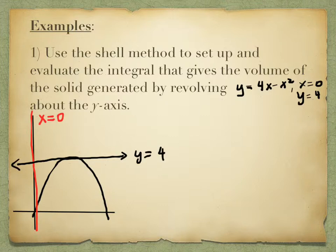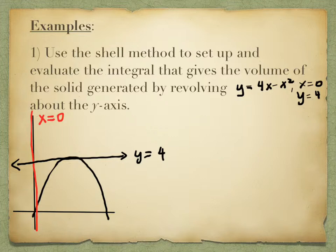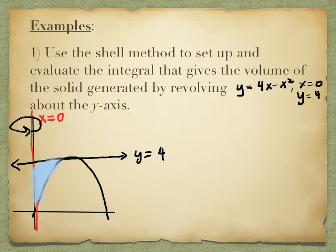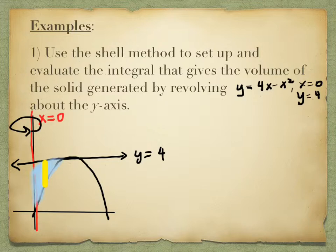Can you see the part we're shading? We're rotating around the y-axis. We draw a representative rectangle, and what's different now is that it's parallel to the y-axis. A student once told me she remembered it because 'parallel' and 'shell' rhyme — shell method uses a parallel rectangle. So this representative rectangle, the yellow piece, has to be parallel to the y-axis.